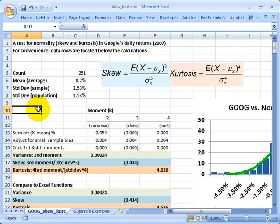Hi, this is David Harper of Bionic Turtle with an illustration of how to calculate skew and kurtosis, which are measures of normality, or we use them to see if a distribution is normally distributed.